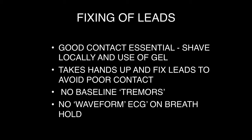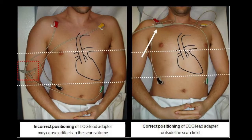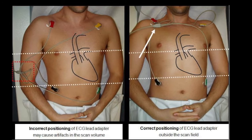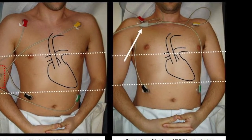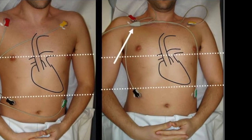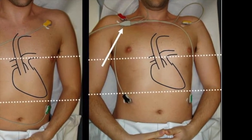Once the leads have been placed, look at the ECG trace on the monitor. No diagnosis needs to be made from this trace; however, there should be no tremors in the baseline, no waveform abnormalities, and the ECG trace should not move with each breath hold and breathing. This diagram shows how the wires of the ECG leads should be kept out of the scan field, which is very important as they may lead to artifacts during acquisition.